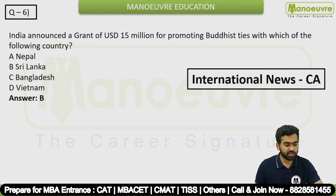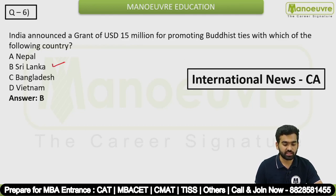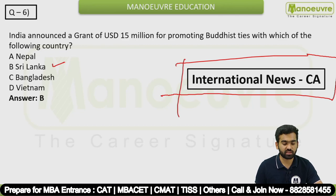Question 6: India announced a grant of USD 15 million for promoting Buddhist ties with which country? The answer is Sri Lanka. This is an international news current affairs question.